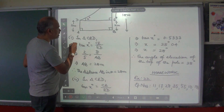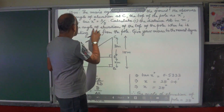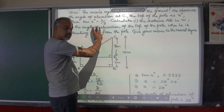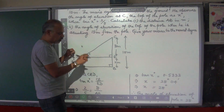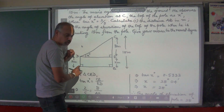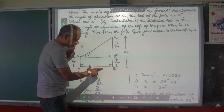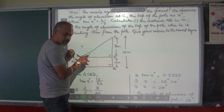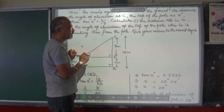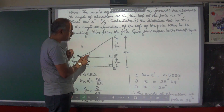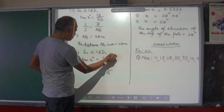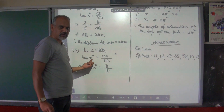Now the second part of the question: calculate the angle of elevation of the top of the pole when he is standing 15 meters from the pole. This is a separate question. He is standing 15 meters from the pole, so this distance is 15 meters. Don't go by the value found from the first subdivision. We are going to use triangle CEB. In triangle CEB, tan of angle X is equal to CE by ED.